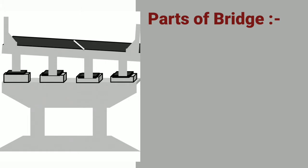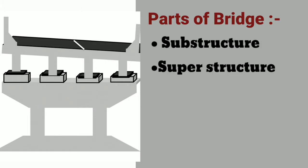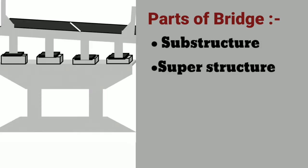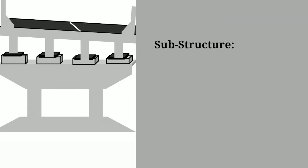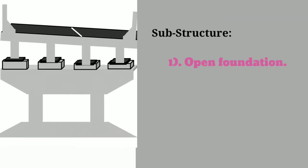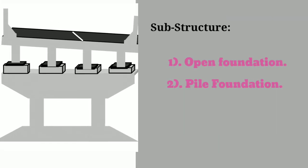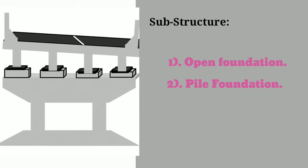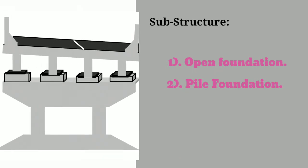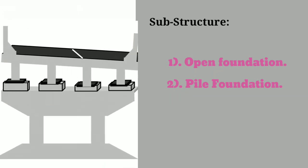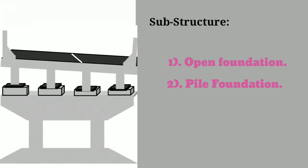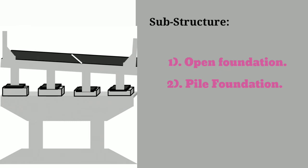Parts of a bridge are mainly divided into two parts: sub-structure and super-structure. In sub-structure there are two types — open foundation and pile foundation. But in this video we will discuss only open foundation.